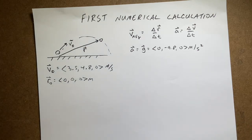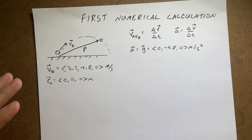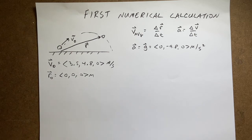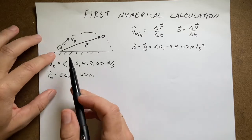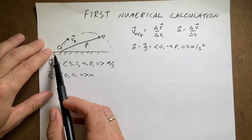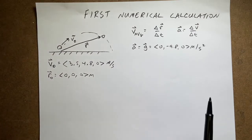Today we're going to do a numerical calculation. I'm going to step you through it. Suppose I have a ball that's shot up with some initial velocity vector v0 and it travels through the air. I want to find out where this ball is at different times — I want to find everything there is to know about this ball.